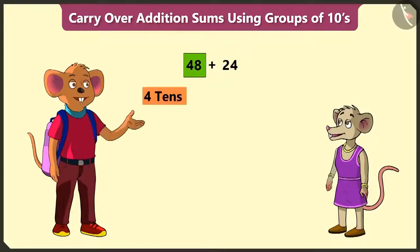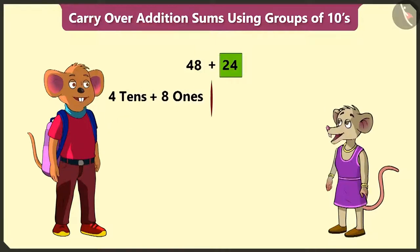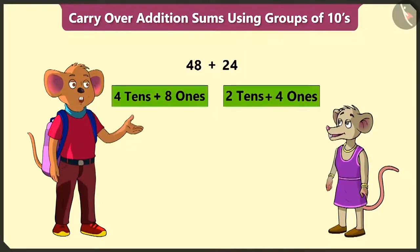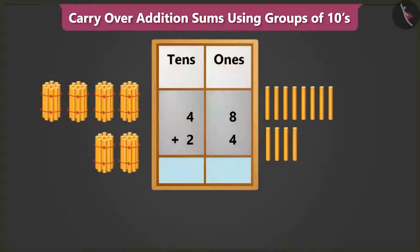48, that is 4 tens and 8 ones. Similarly, 24 means 2 tens and 4 ones. Now, to add both these numbers, we have to place them in the tens and ones boxes.